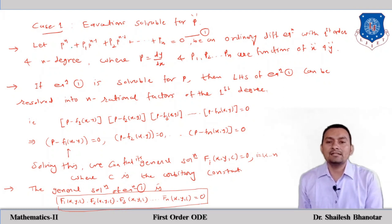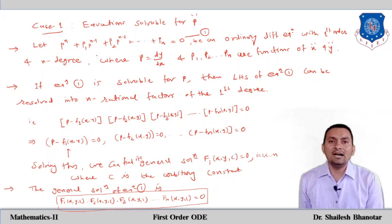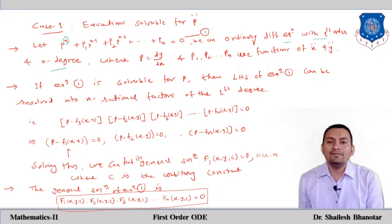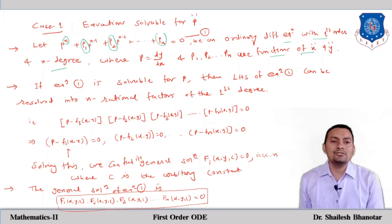For the equation solvable for p, assume the general form: p raised to n plus P1 times p raised to n-1 plus P2 times p raised to n-2 plus ... plus Pn equals 0. This is a first order, nth degree ODE where p = dy/dx and P1, P2, ... Pn are functions of x and y.